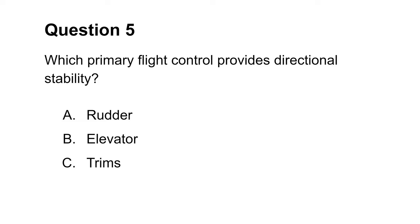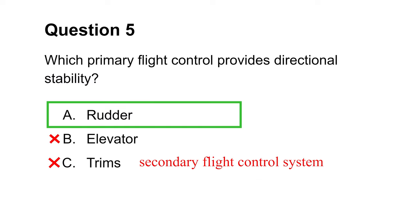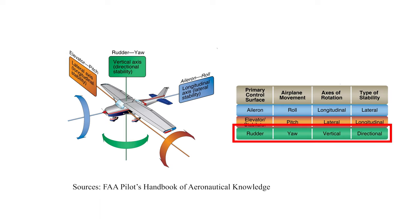The last question wants to know which primary control provides directional stability. You can immediately rule out choice C. Trims represent secondary flight control systems. Choice B is incorrect either. Elevator gives an airplane a pitching motion by diving down or up along the lateral axis. As the aircraft pitches, the longitudinal axis is getting disturbed. Thus, the pilot can restore the longitudinal stability with the elevator. This makes choice A the answer. A rudder gives an airplane a yawing motion like a steering wheel does for a car. By rotating the aircraft along the vertical axis, the rudder provides directional stability.